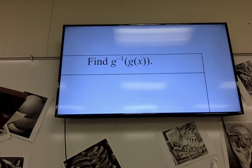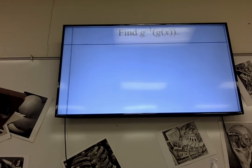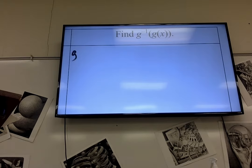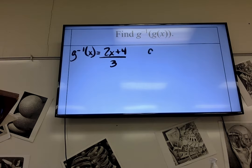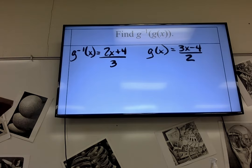We're going to find g inverse of g of x. So, let's go in the other way. g inverse of x was 2x plus 4 over 3. And g of x is 3x minus 4 over 2. And we're just substituting it backwards, the other way.